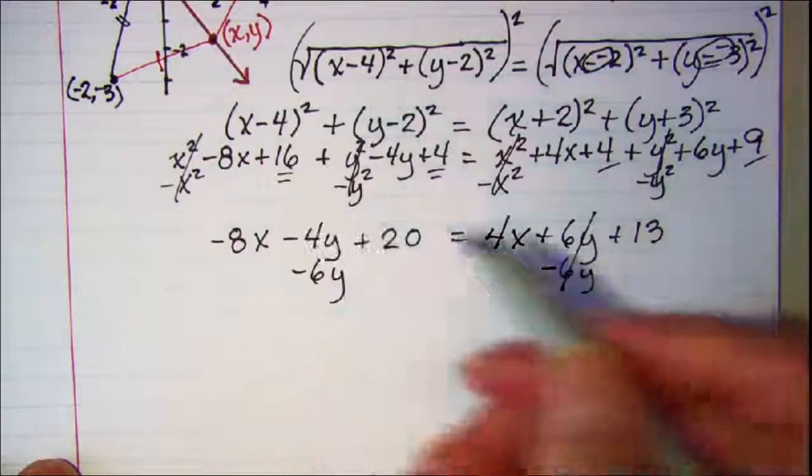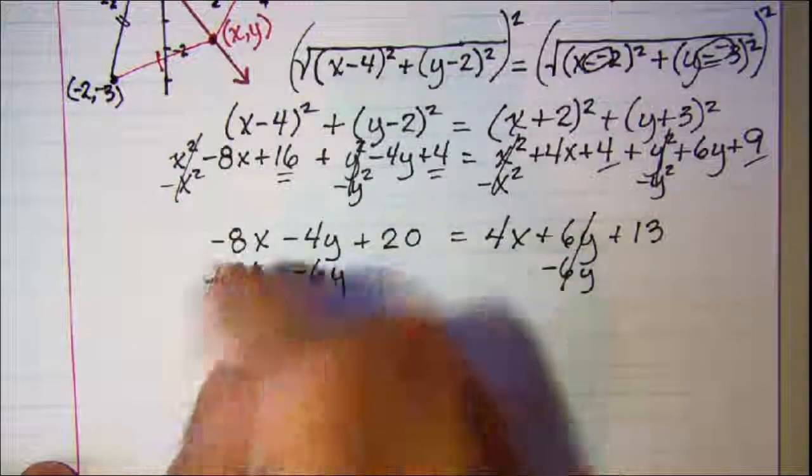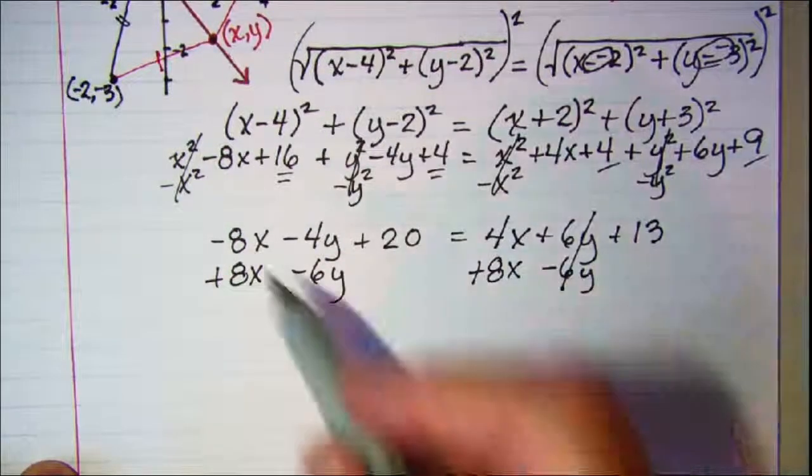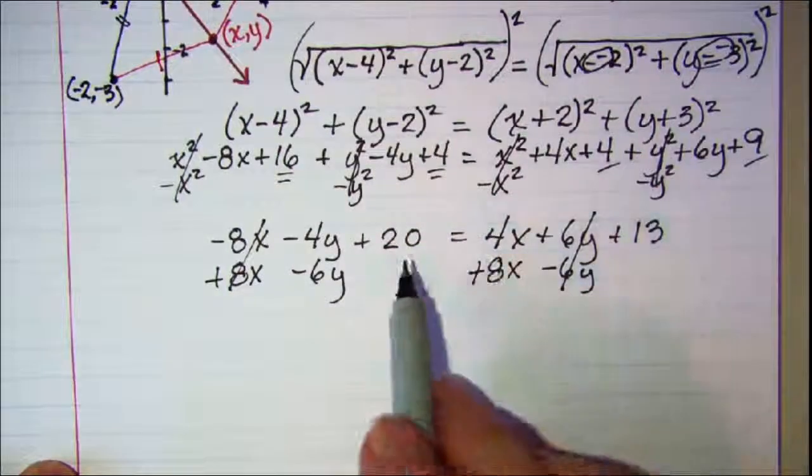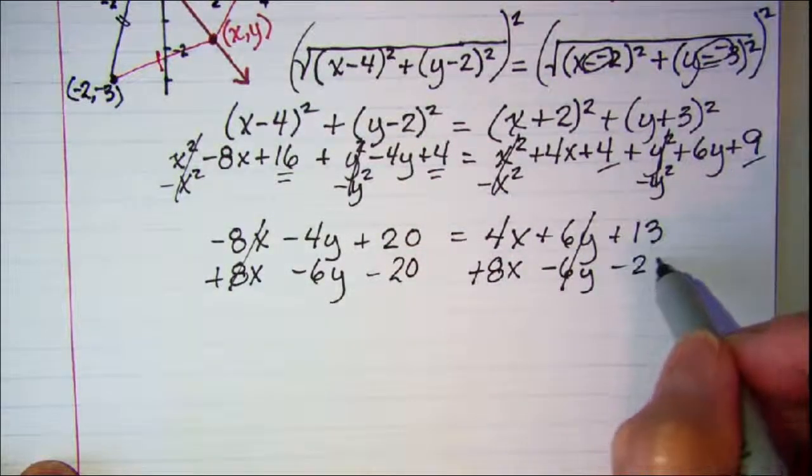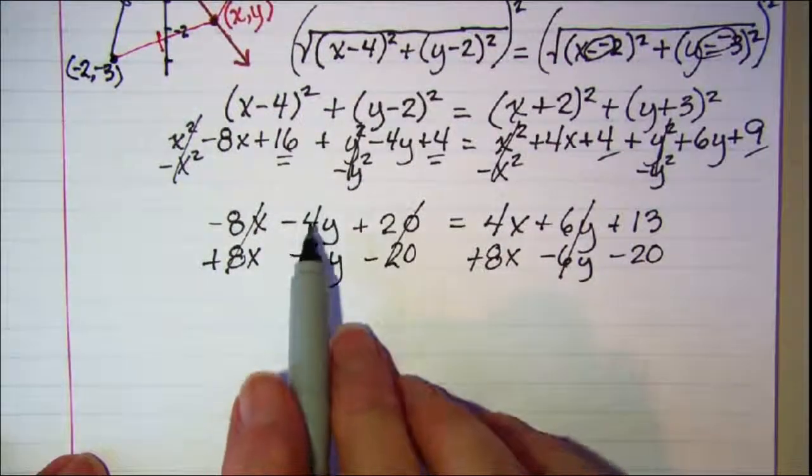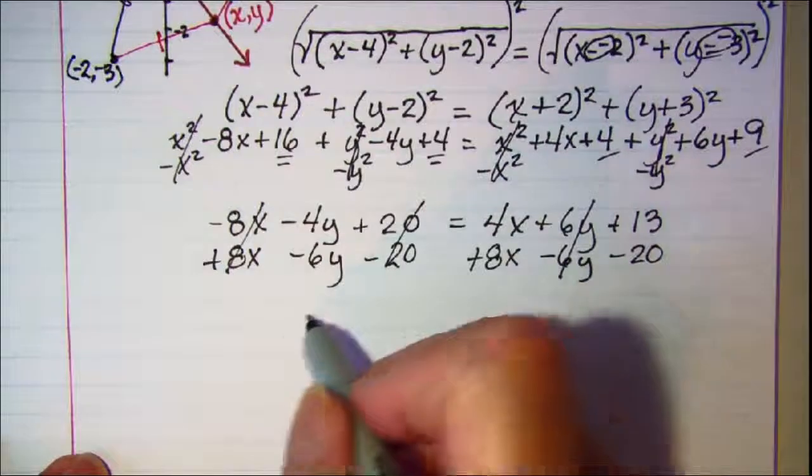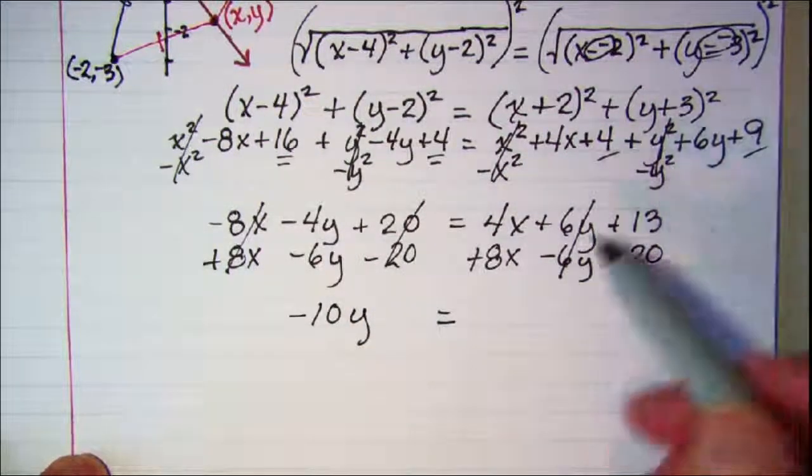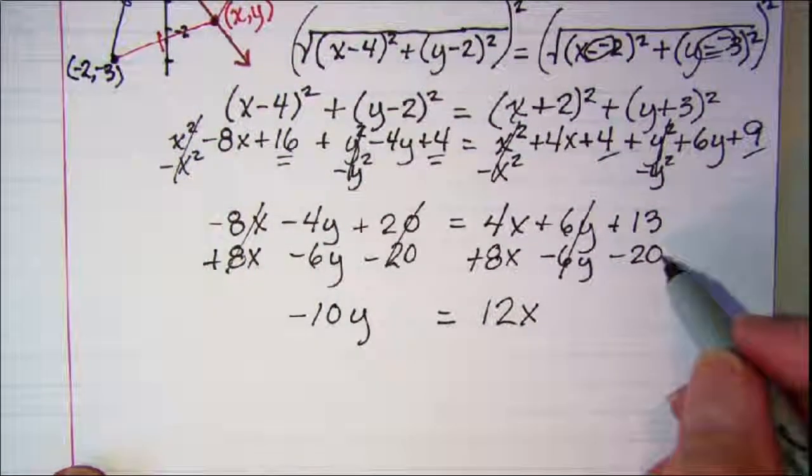And then let's go ahead and add 8x. Take it off of this side, add 8x here and that will cancel, and then subtract 20 and the 20s will cancel there. So I have -10y = 12x - 7.